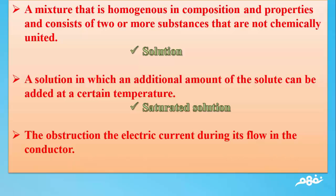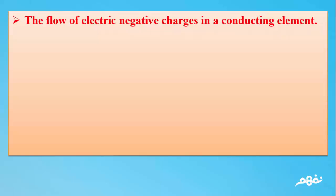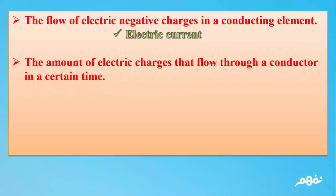Number 15: The obstruction of the electric current during its flow in the conductor. The answer: Resistance. Number 16: The flow of electric negative charges in a conducting element. The answer: Electric current. Number 17: The amount of electric charges that flow through a conductor in a certain time. The answer: Electric current intensity.